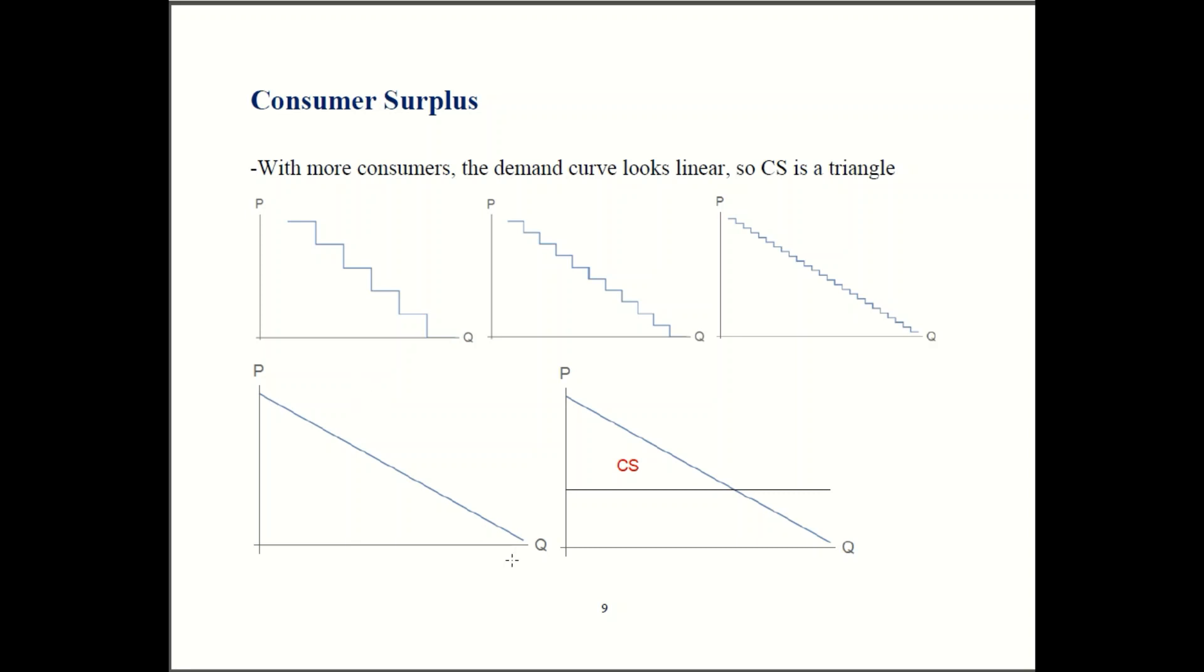When you have a linear demand like this, then your consumer surplus will look like this triangle here. The area below demand and above that price line. So I'll rely a lot on linear demand curves in this class. That's because you can find consumer surplus is just a triangle. We all know how to find the area of triangles. If you had a nonlinear demand curve, you'd still find the area, but that would require calculus. That'd be beyond the scope of this course. So we'll typically stick to linear demand curves here.